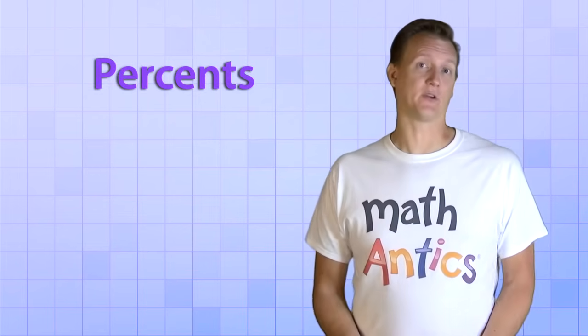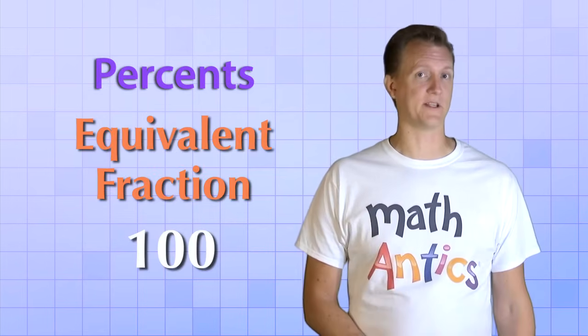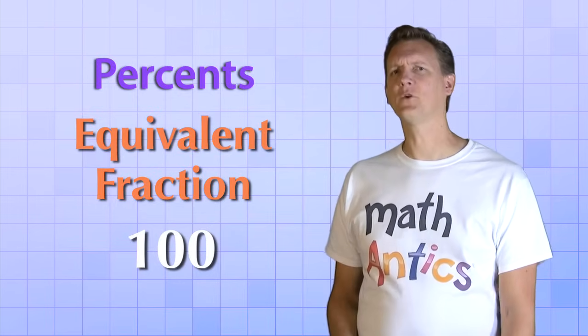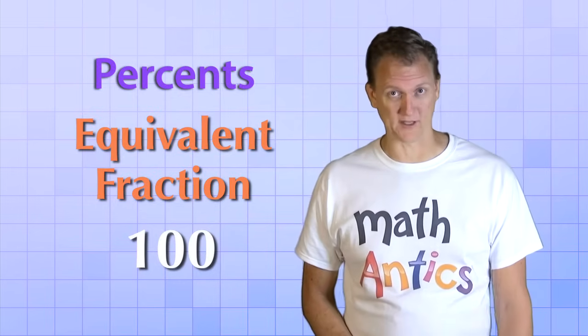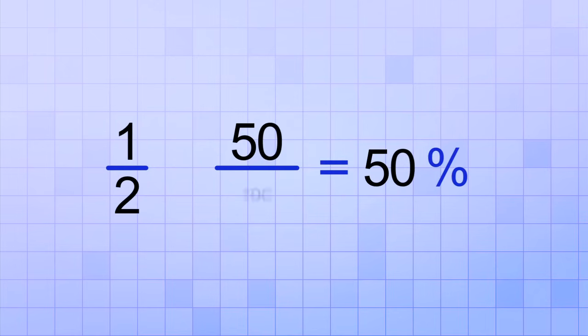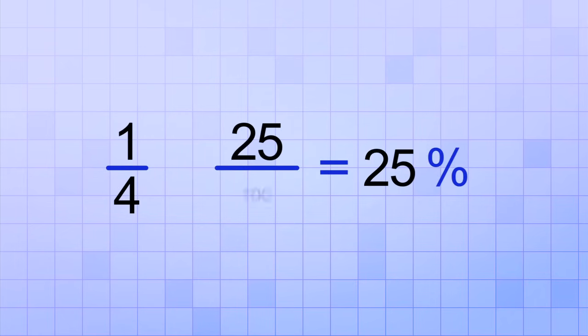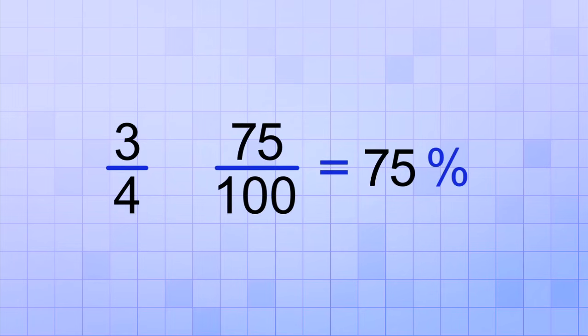Okay, now that you know that percents are really just a special kind of equivalent fraction that always has 100 as the bottom number, let's see a few examples that are so common you should probably memorize them. We already saw that 1 half is the same as 50% because 1 half and 50 over 100 are equivalent fractions. 1 fourth is the same as 25% because 1 over 4 and 25 over 100 are equivalent fractions. And 3 fourths is the same as 75% because 3 over 4 and 75 over 100 are equivalent fractions.